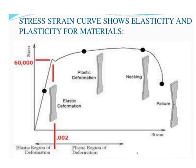This graph shows the stress-strain curve, illustrating elasticity and plasticity for materials. On the x-axis is strain, and on the y-axis is stress. First there is elastic deformation — when you apply stress, the material returns to its original position up to the red line. After that, further applied stress causes permanent change in length: plastic deformation. Still further stress causes necking — the material becomes weaker — and eventually at a final point the material breaks. This graph shows plasticity and the failure under stress.